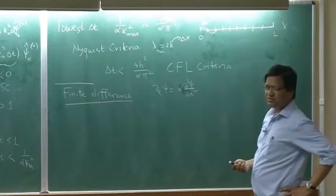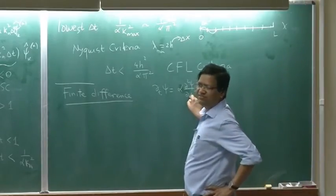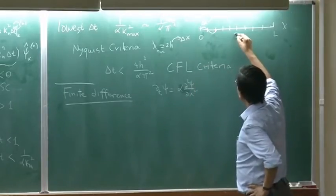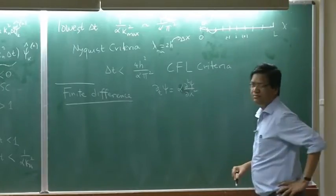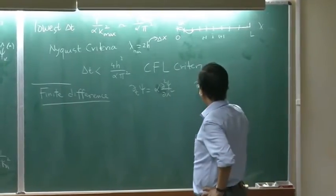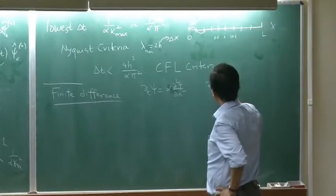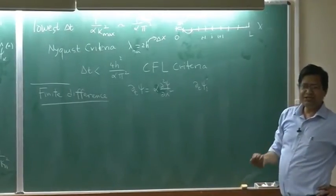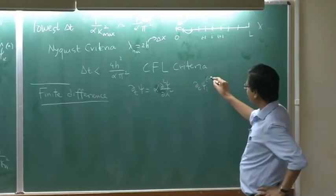The simplest scheme is the central difference scheme for the double derivative. I will label them as i, i minus 1, i plus 1. The partial derivative at point i — this point psi_i — now also has a time index.